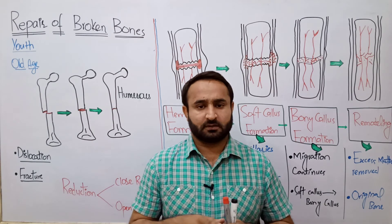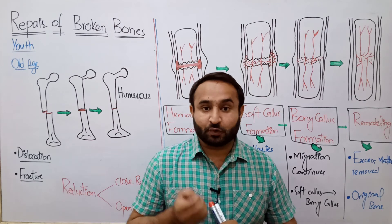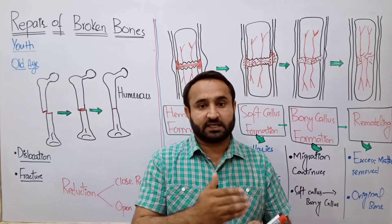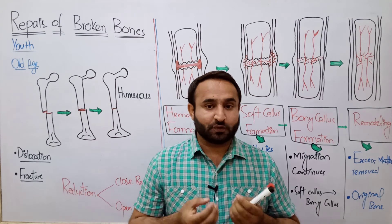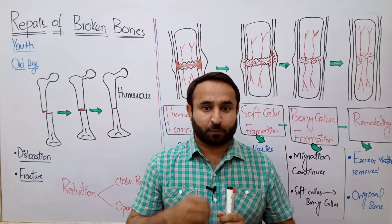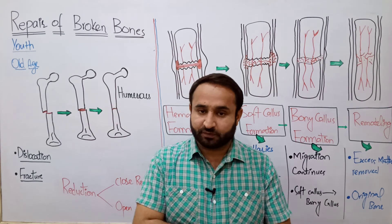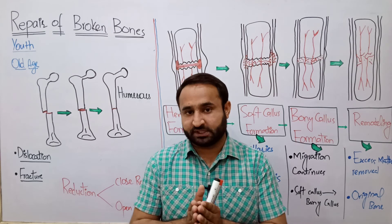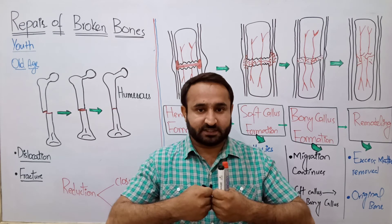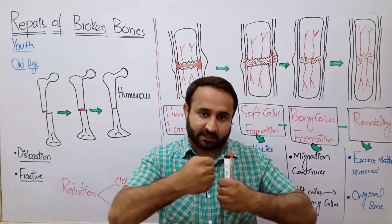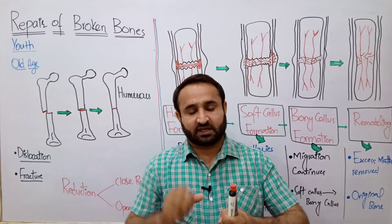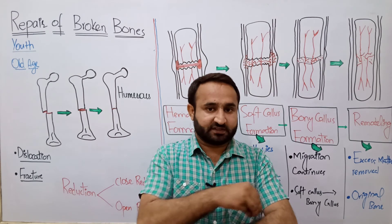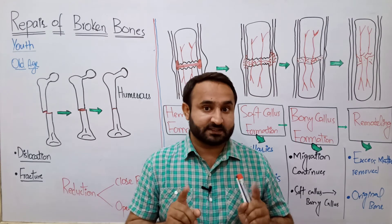Reduction can be done in two ways. One is closed reduction. If a joint has slipped or the injury is not very serious — bones are not broken badly, maybe just a crack or minor fracture — then closed reduction is performed without surgery, without opening soft tissues. The doctor takes an X-ray; the radiologist confirms there is no major issue. Then the orthopedic doctor uses their hands to coax the broken bones back into their original position and applies a cast — like plaster of Paris — or bandages to immobilize the bone.